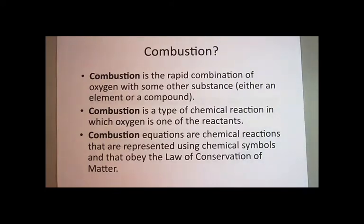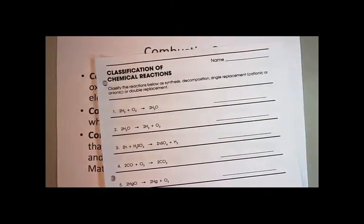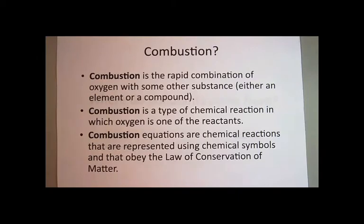I have another worksheet for you to do after you finish the POGO worksheet, called 'Classification of Chemical Reactions.' This is just practice identifying types of reactions. I don't want you to think that a combustion reaction is the only type of chemical reaction — there are many different types, and you can identify the types by looking at the reactants and the products. Remember, reactants are on the left-hand side of the arrow and products are on the right-hand side. The total number and type of element will be the same across the reaction; there's just a rearrangement.